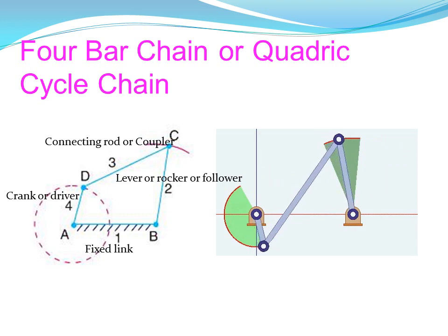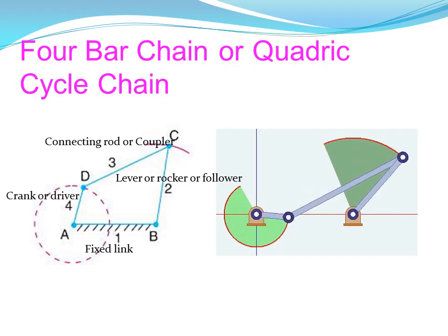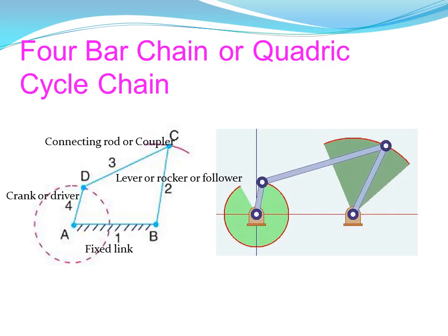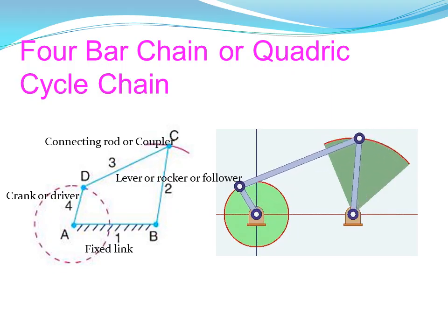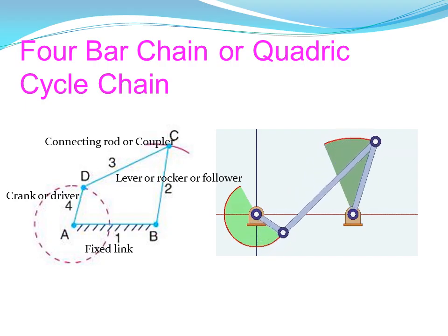The crank makes a full rotation of 360 degrees. The coupler link has oscillatory motion and the upper node oscillates. The follower link has partial rotary motion, and this motion is full rotation in the path.